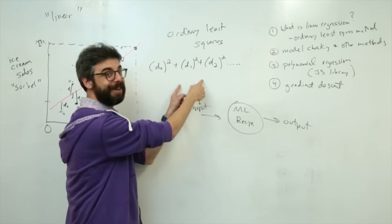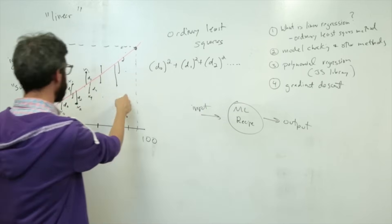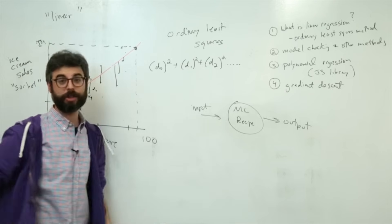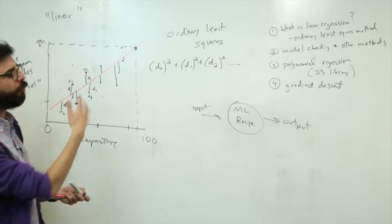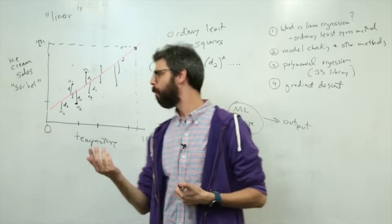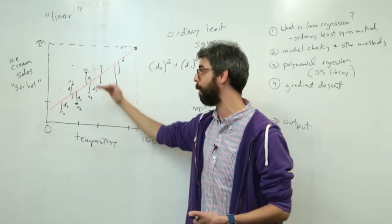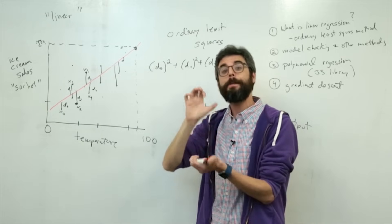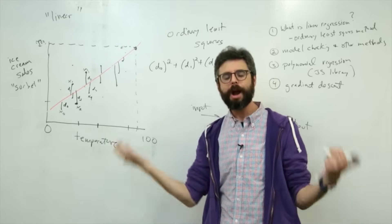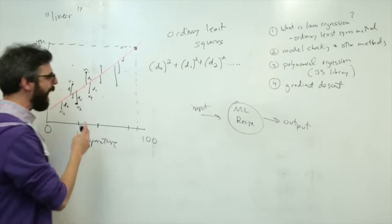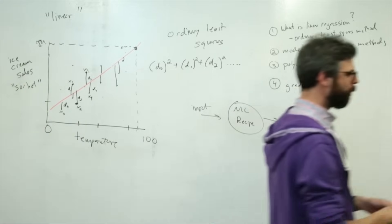We want to minimize this value. So how do we calculate, how do we find a line that minimizes all of those? So you might be asking, why are you squaring the values? Well, this is a common technique. You'll notice that some points are below the line and some points are above the line. So the difference could be positive or negative. Squaring it gets rid of that difference.